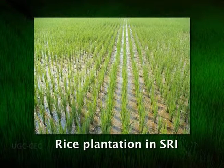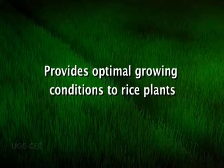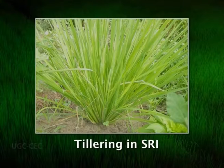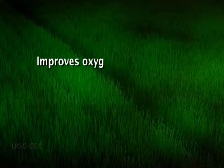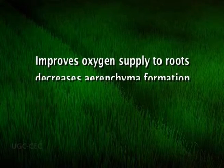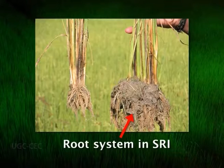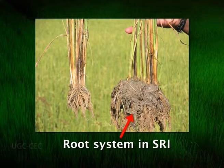SRI seems promising in overcoming the shortage of water in irrigated rice. The key physiological principle behind SRI is to provide optimal growing conditions to individual rice plants; tillering is maximized and the phyllochrones are shortened, believed to accelerate growth rates. Intermittent irrigation is believed to improve the oxygen supply to rice roots, thereby decreasing aerenchyma formation. This causes a stronger, healthier root system with a potential advantage for nutrient uptake. Proponents of SRI claim that its use increases yield, saves water and reduces production costs.